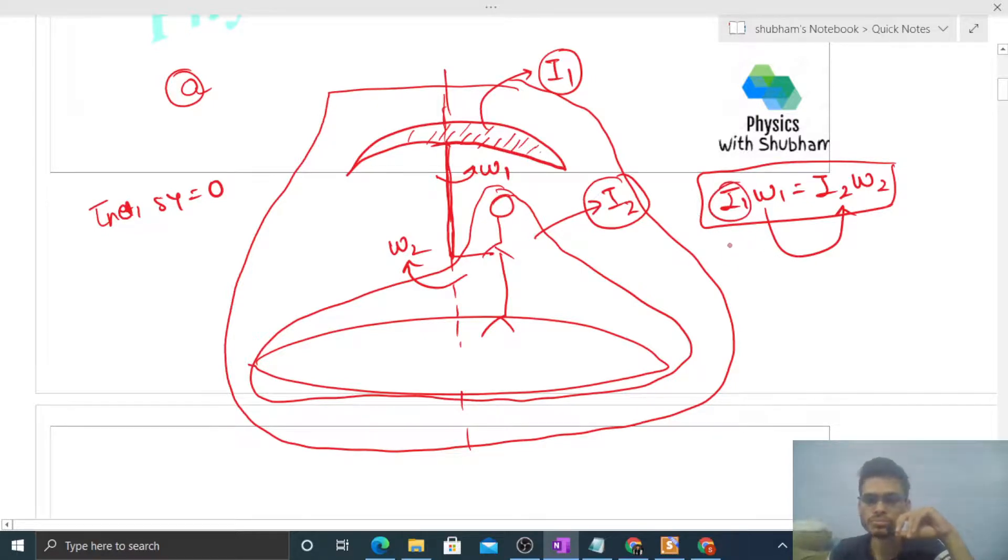Now I1 ka value aapko de rakha hai: 2 into 10 raised to the power minus 3 into omega 1, that is equal to I2. I2 ka value aapko 3 into 10 raised to the power minus 3 de rakha hai into omega 2. So yahan se twice of omega 1 that will be thrice of omega 2. We have to find out the value of omega 2, the angular velocity of this platform. So humare paas 2 variables hai: omega 1 and omega 2. So abhi ek equation to aa gayi. Second equation kahan se aayegi?